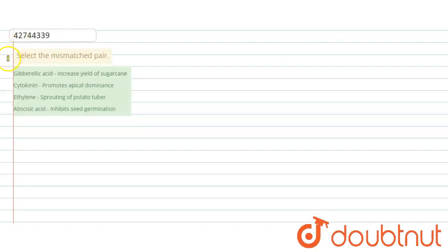Our question is about selecting the mismatched pair. Several phytohormones are given and in the opposite column, their functions are given.